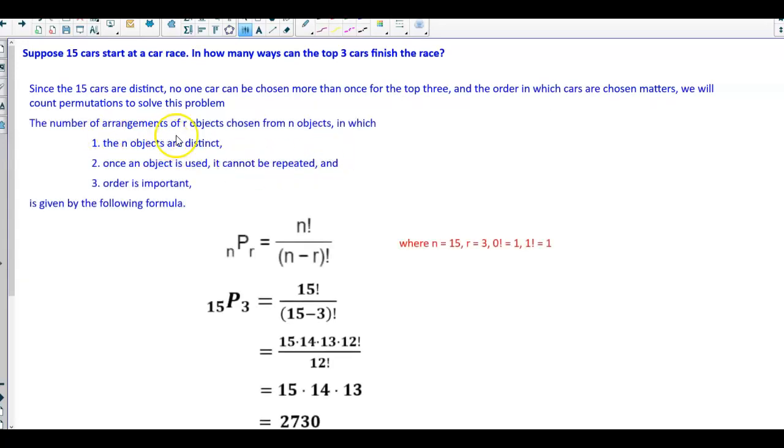Remember that the number of arrangements of R objects chosen from N objects, in which: 1) the N objects are distinct, 2) once an object is used it cannot be repeated, and 3) order is important, is given by the following formula.